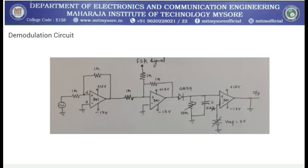This circuit represents the demodulation circuit for FSK, where we are going to use 3 op-amps and 1 OA79 IC, where the FSK signal will be inserted. Then we are going to get an output detected at this particular part.